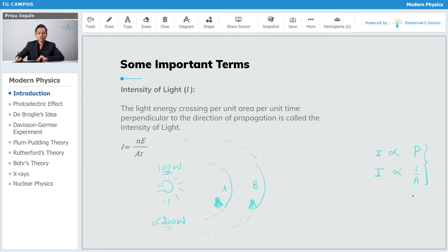Now, I am combining these two results. I will get I equal to power per unit area. That means, whatever the power of the light source is and the area enclosed by that source, it gives you the intensity of that light.